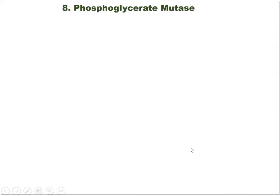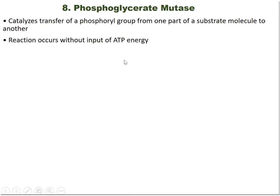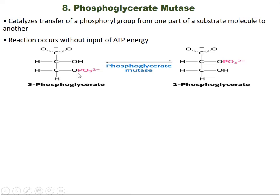Step 8 is catalyzed by phosphoglycerate mutase. The phosphate group is transferred from carbon-3 to carbon-2, converting 3-phosphoglycerate into 2-phosphoglycerate — you can think of it as a mutation in phosphate position. No ATP or energy is required for this transformation; that is why the enzyme is called a mutase.